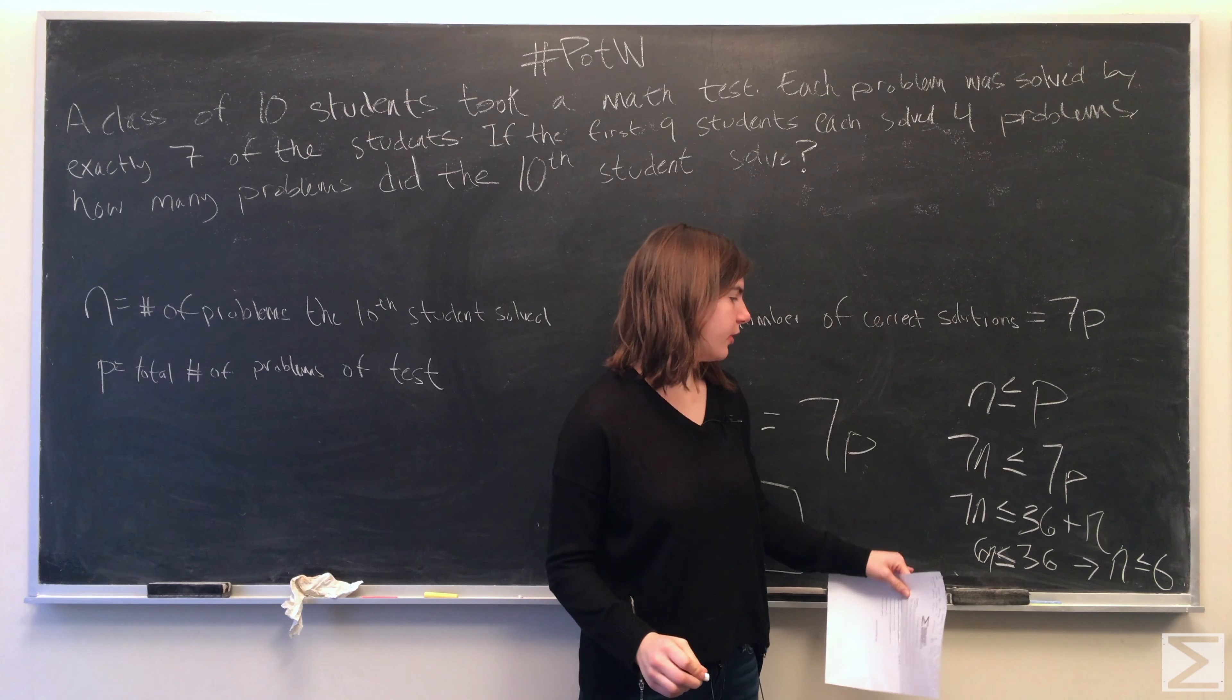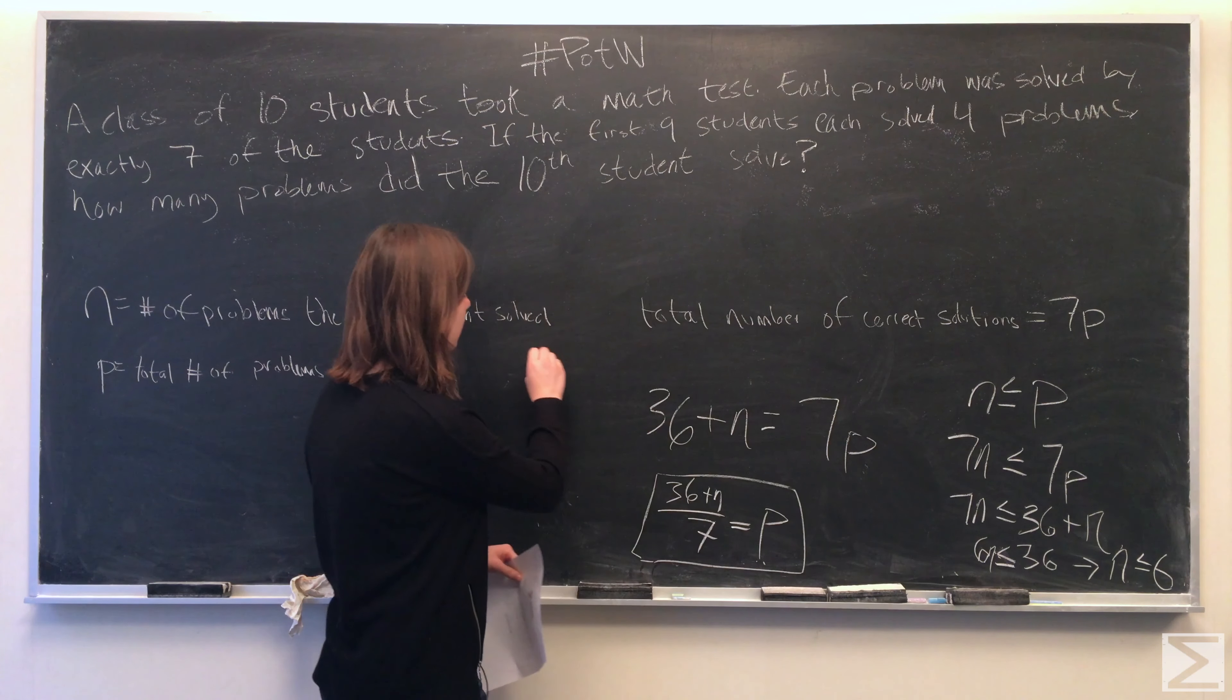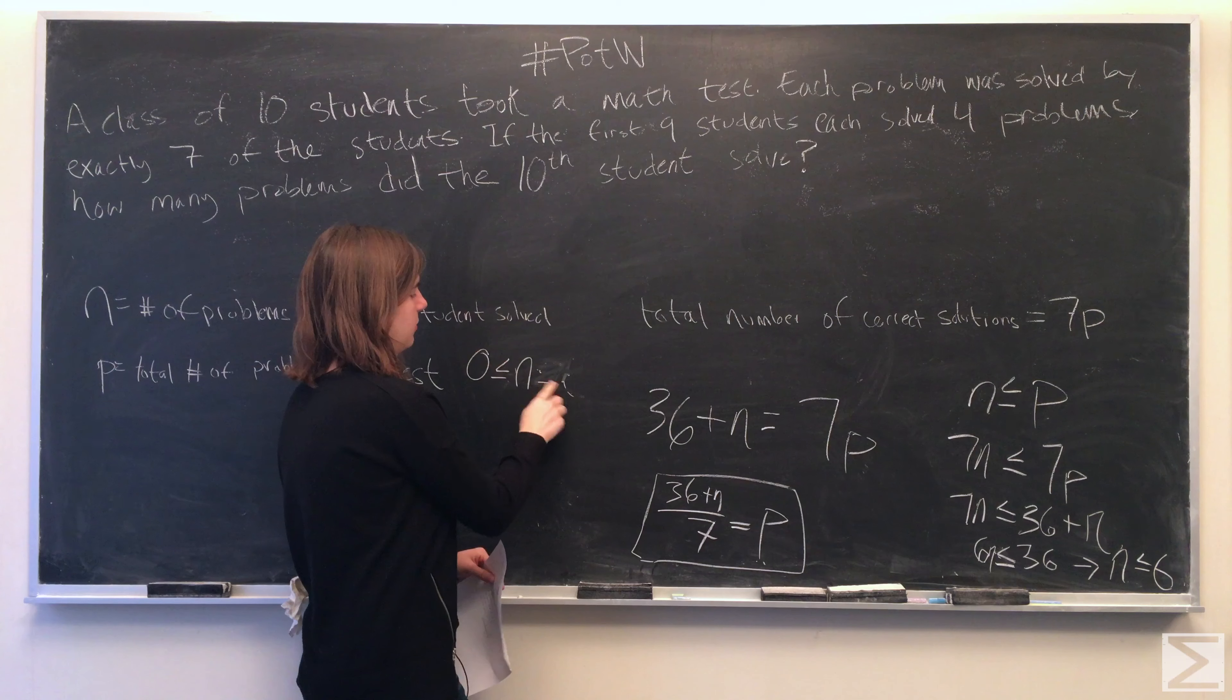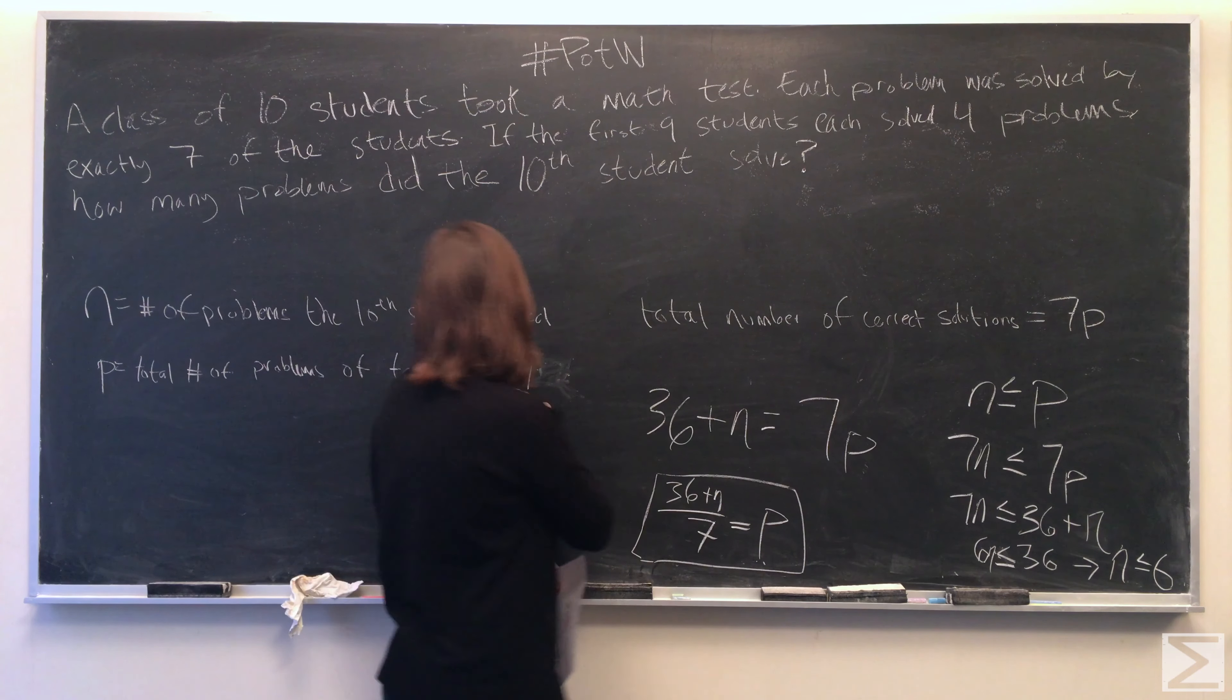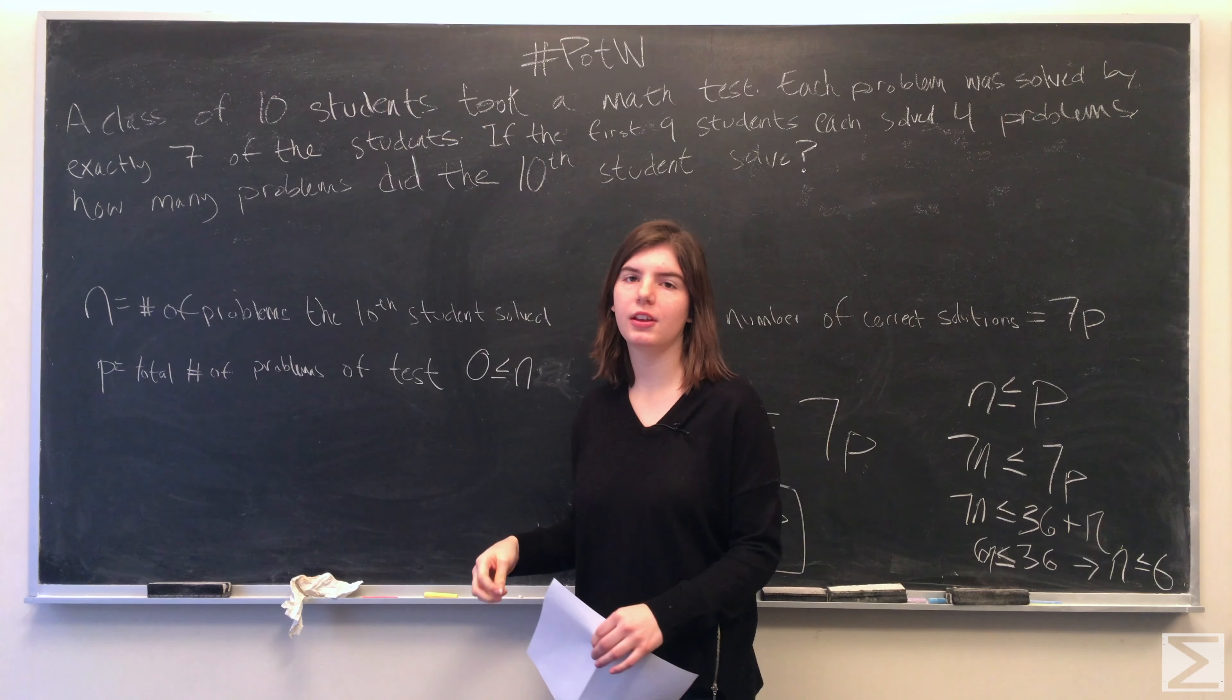When we solve for n, we have n is less than or equal to 6. And n also has to be greater than or equal to 0, because the number of problems the tenth student solved can't be negative.